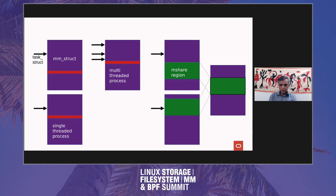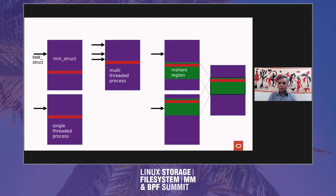Now we're going to have the M-sharing tasks call mmap — and they all appear all at once. This is mapped into everybody's address space all at the same time, because these are literally shared page tables. And so if any of them calls mprotect, that happens to all of them, just like with a multi-threaded process, except that in the purple areas things aren't shared. But in the green area — the stuff labeled M-Share region — everything is shared.